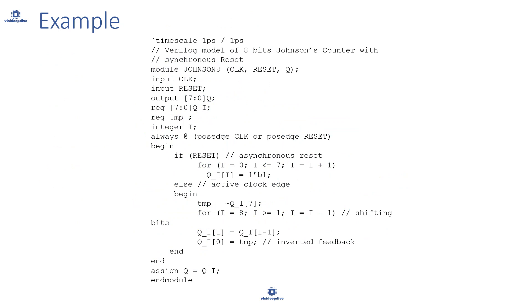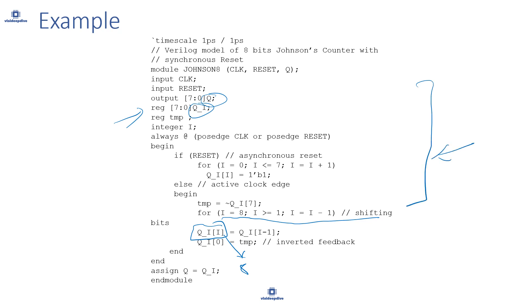Here's an example of an RTL code with a mistake: assigning a value to an out-of-range index. In a counter, Q is declared as [7:0] and Q_i is [7:0], but the loop runs for i equal to 8, trying to assign to index 8 which doesn't exist. That's a mistake lint catches very easily. To catch this issue using functional verification, you'd need to write a specific test bench, but for lint, you just give the RTL and it flags the out-of-range access immediately.